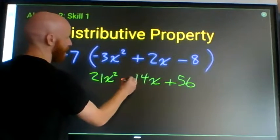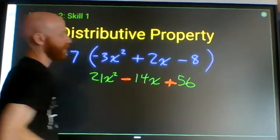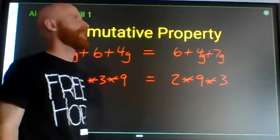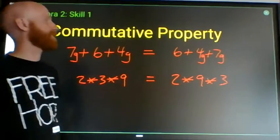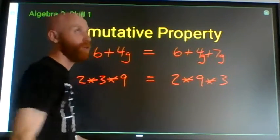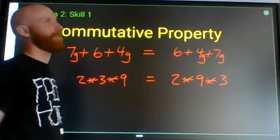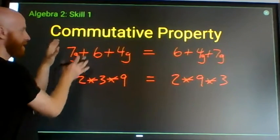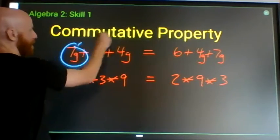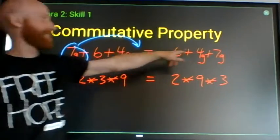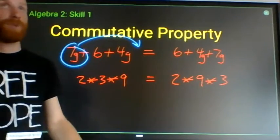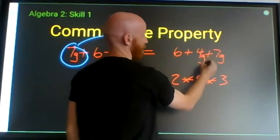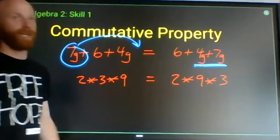Distributing a negative value ends up changing all of the operators within the parentheses. The commutative property of addition and multiplication says that if I am adding terms together, I can switch the order of the terms and still have the same sum. For example: 7G's plus 6 plus 4G's — I can pull an entire term to the end without changing the value of the expression.